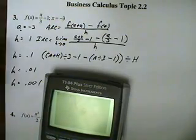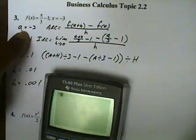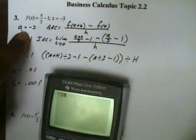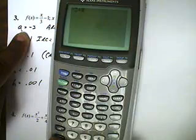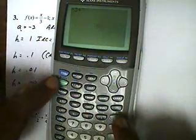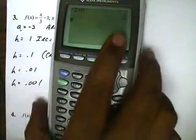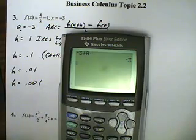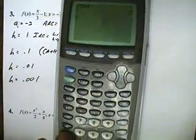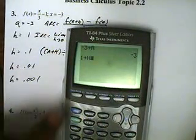First, we tell the calculator that negative 3 is being stored — the store button is right here — stored into alpha A, and then enter. Next, we want 1 stored into alpha H, and then enter.